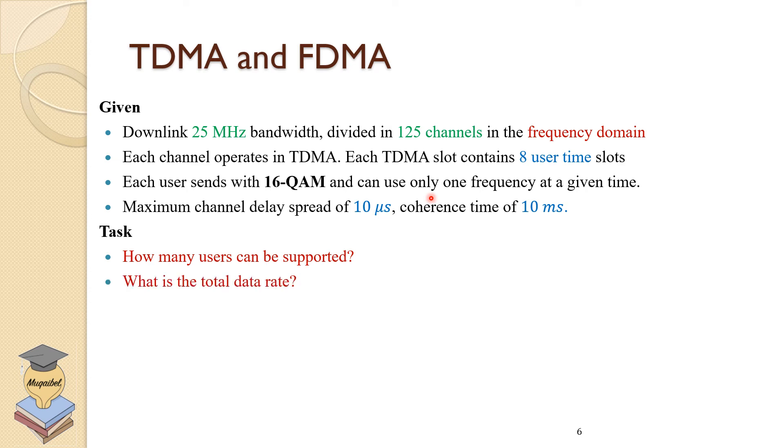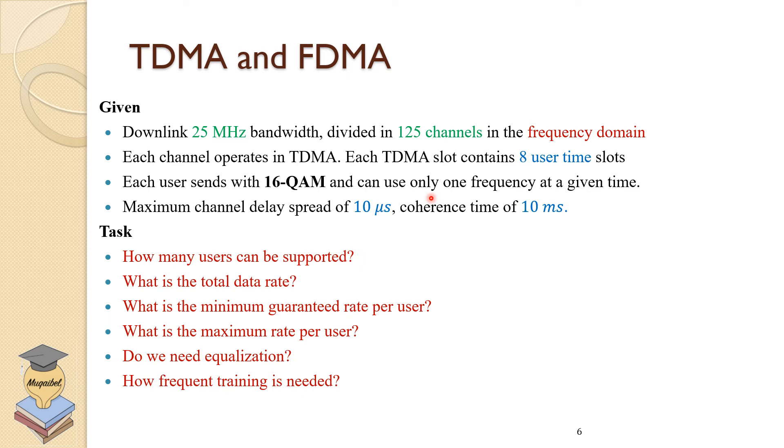Our task is to answer the following questions. How many users can be supported? What is the total data rate? What is the minimum guaranteed rate per user? What is the maximum rate per user? Do we need equalization? And finally, how frequent training is needed? The last two questions will be related to the last information about the wireless channel. Please pause the video and give yourself five minutes to think about how many users can be supported in frequency channels and then every channel is divided into eight. Once you're ready with your calculations and sharing your analysis, I will move to the next slide.